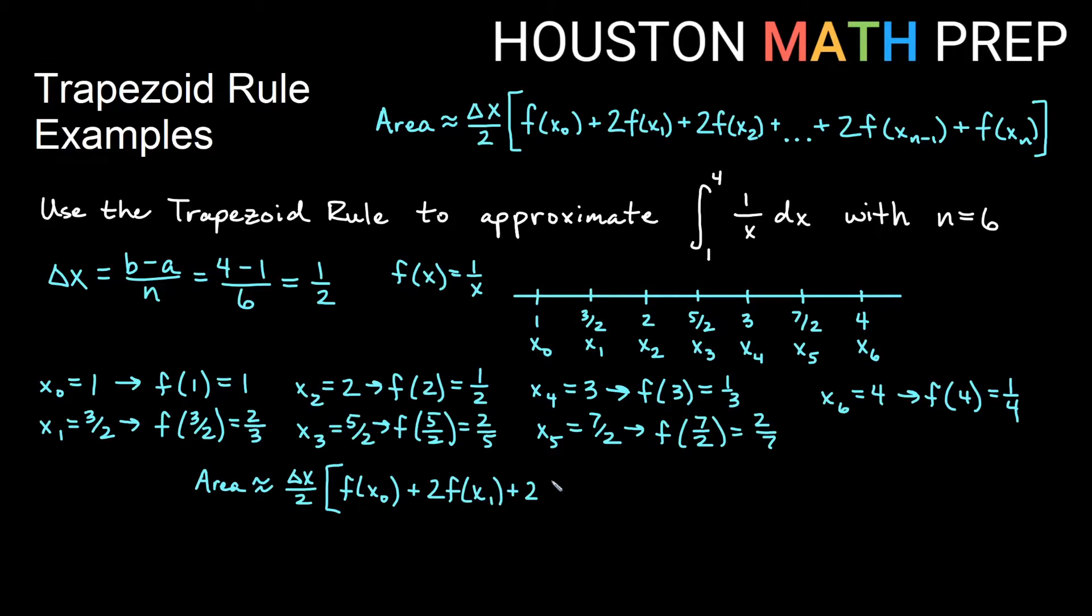So 2 times f(x₁) plus 2 times f of x₂ plus 2 times f of x₃ plus 2 times f of x₄ plus 2 times f of x₅, and when we get to the last one, recall that we will only have one of those. So a single f of x₆ on the end.